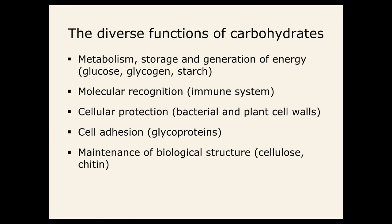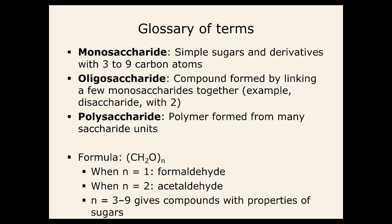Carbohydrates have a lot of different functions. Our goal in this class is to look at metabolism, storage, and generation of energy. But carbohydrates also play a role in the immune system for molecular recognition, in bacterial and plant cell walls for cellular protection, in glycoproteins for cell adhesion, and certain polysaccharides — sugar polymers — like cellulose and chitin maintain biological structures. Monosaccharides are simple sugars from three to nine carbons. Oligosaccharides link a few monosaccharides together — a disaccharide has two. Polysaccharides are polymers from many saccharide units.